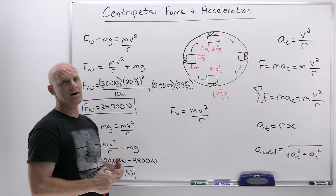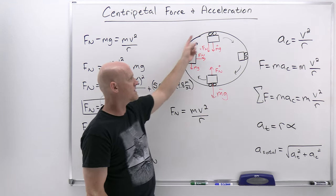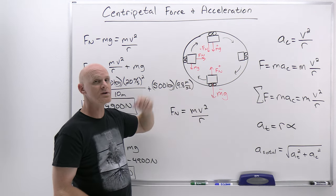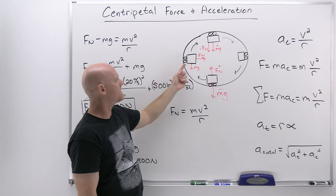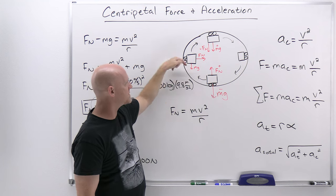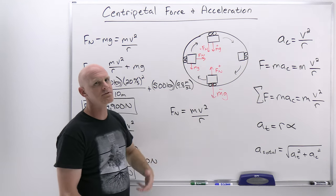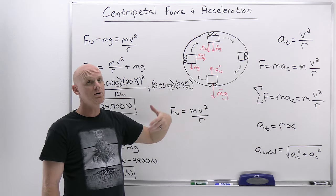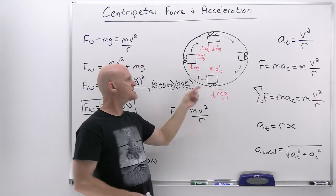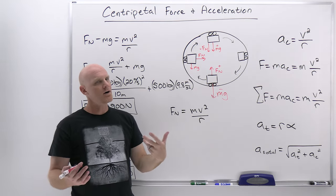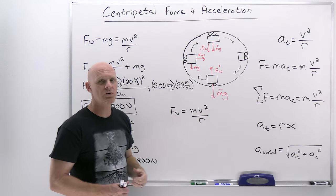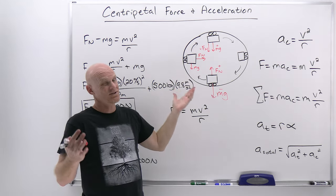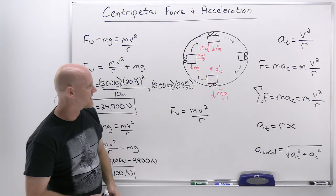It would actually be impossible without some added force to maintain a constant speed of 20.0 meters per second all the way around the circle, because as it went up it would want to slow down since gravity provides a net force. In this question we've somewhat cheated — there would have to be some modulating force propelling the car to exactly counteract the component of gravity in the direction of motion all the way around the circle, to keep it going at a constant 20.0 meters per second.